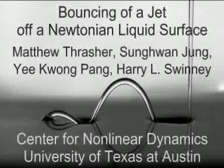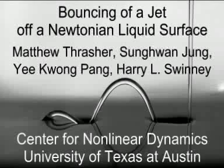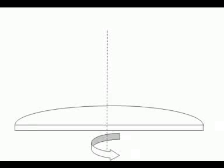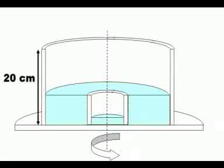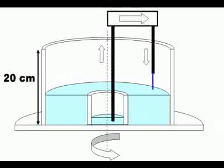A Newtonian liquid jet can bounce off the surface of a moving bath. On top of a rotating table, we mount an acrylic tank holding a bath of silicon oil several hundred times more viscous than water.